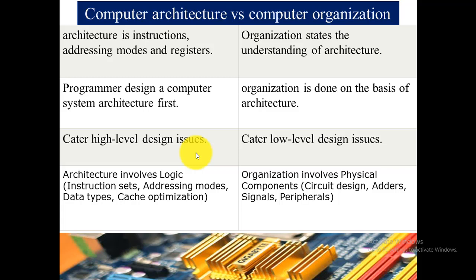The last difference is that computer architecture involves logic — such as instruction sets, addressing modes, data types, and cache optimization — while computer organization involves physical components such as circuit design, adders, signals, and peripherals.